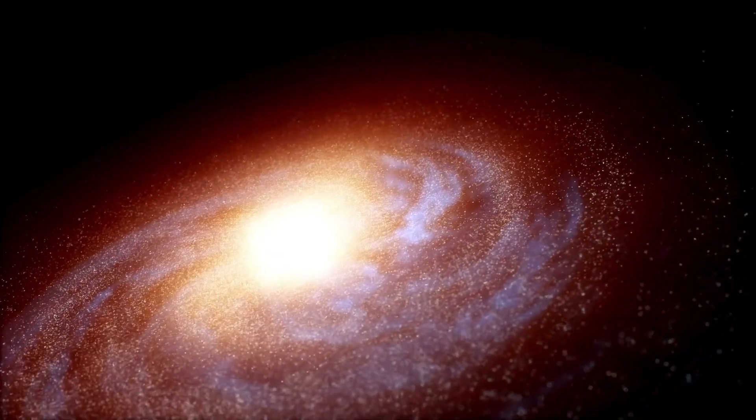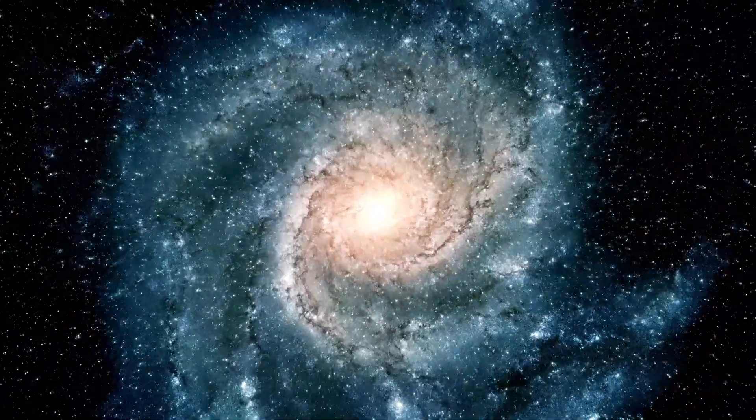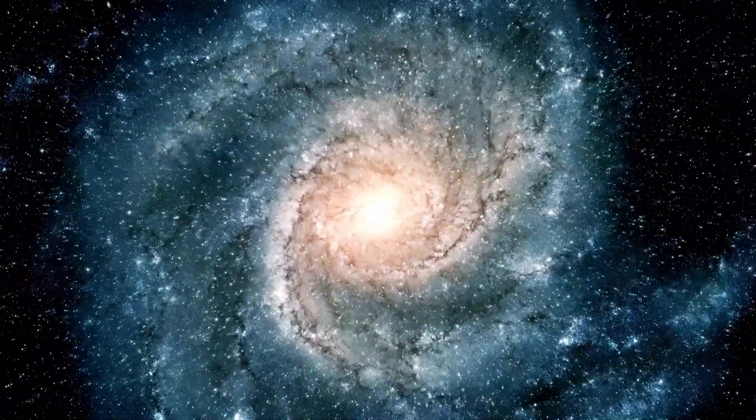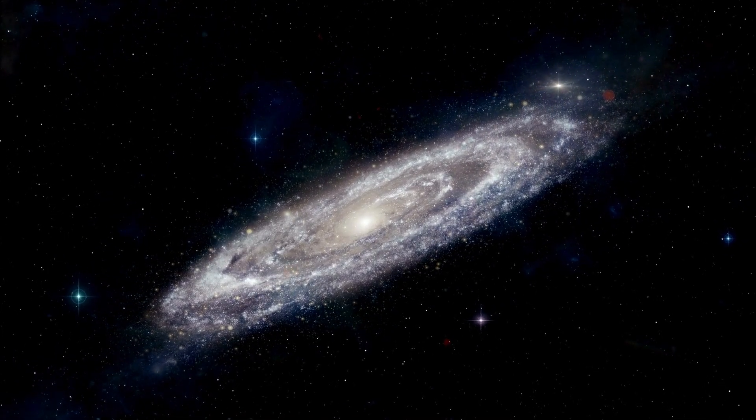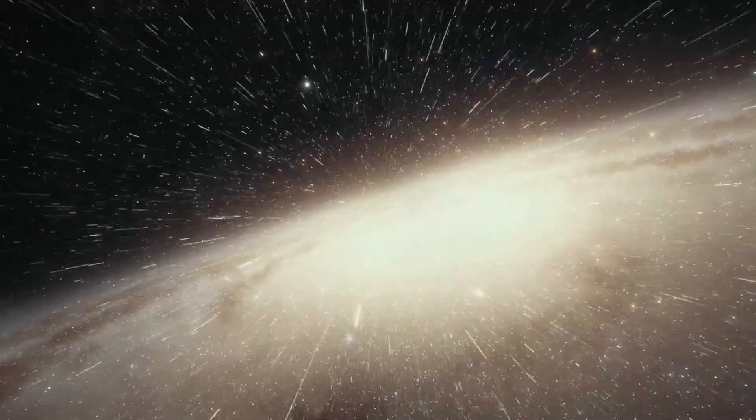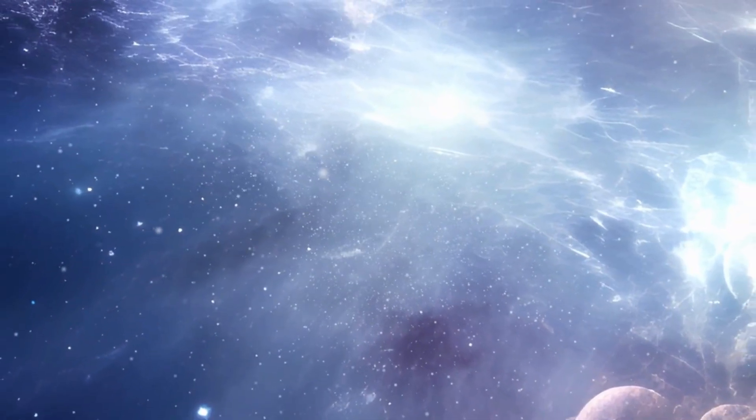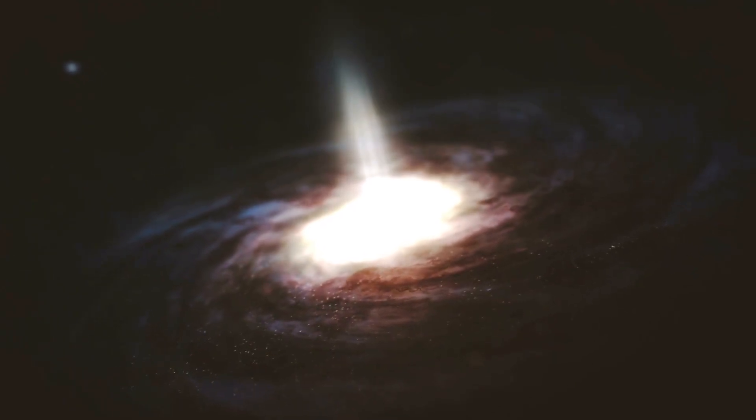Moving inward, the photon sphere constitutes the second layer, where light orbits the black hole in perpetual captivity. Any photons that dare to venture into this realm succumb to the overwhelming gravitational pull, forever imprisoned within the cosmic embrace of the black hole.